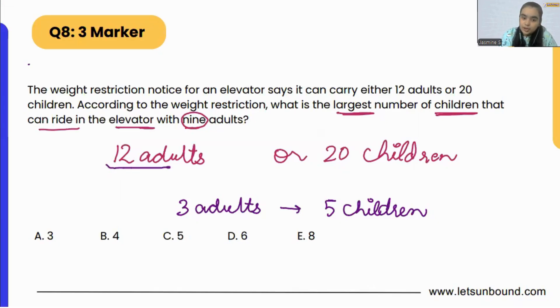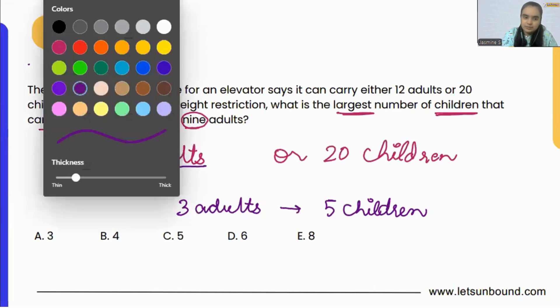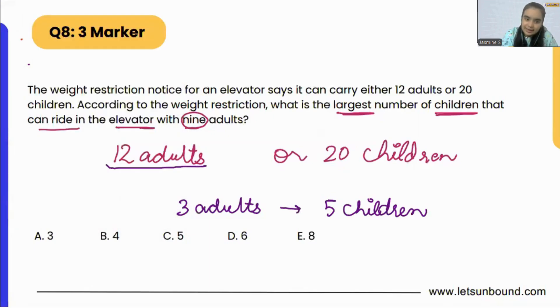12 adults, right? So for better idea, let me draw 12 adults: 1, 2, 3, 4, 5, 6, 7, 8, 9, 10, 11, 12. There are 12 adults, right? But what they are saying is, what is the largest number of children that can ride in the elevator with nine adults only?